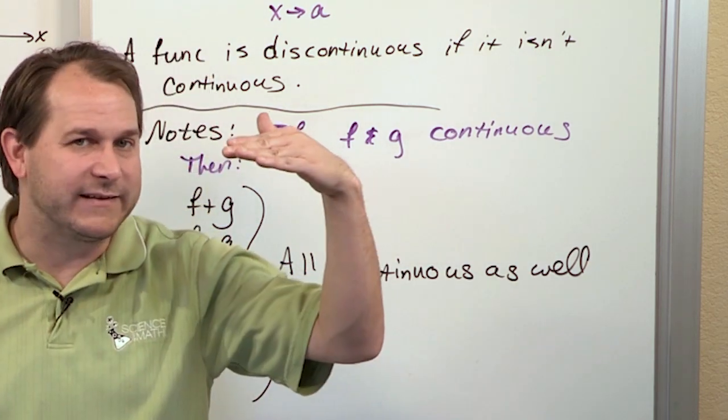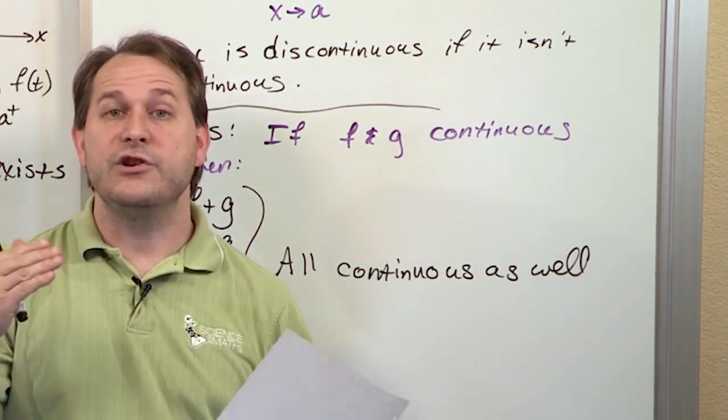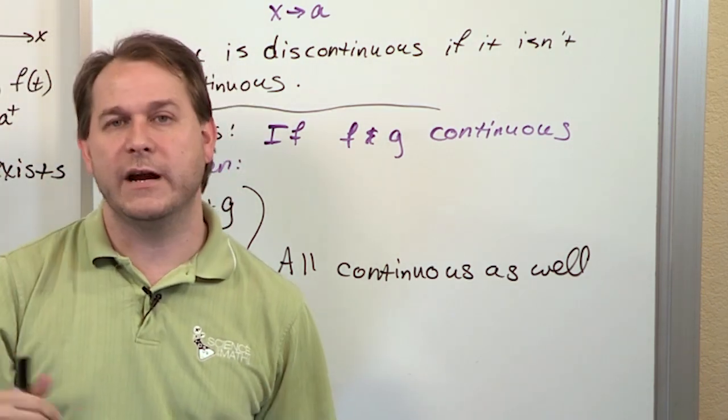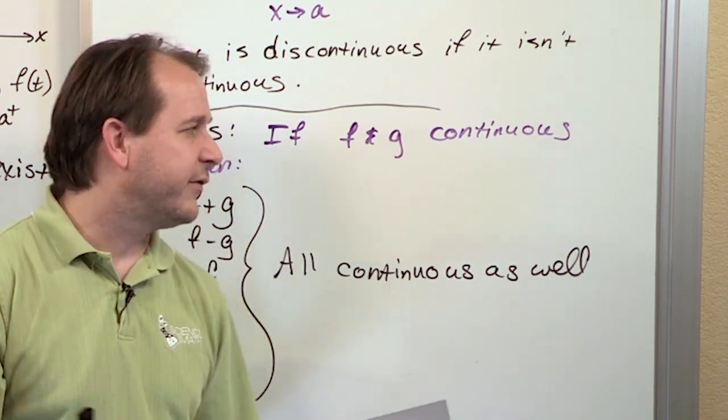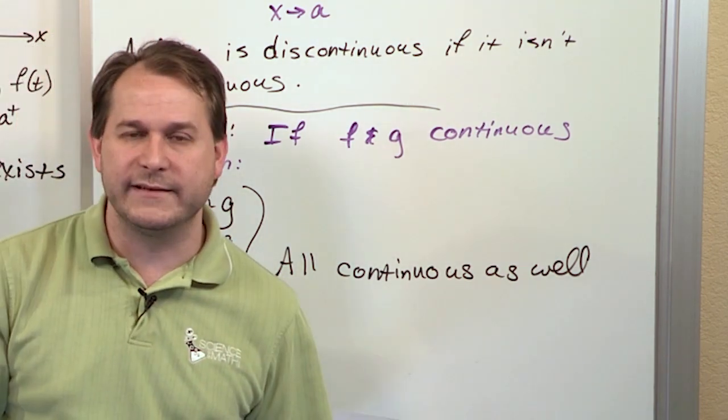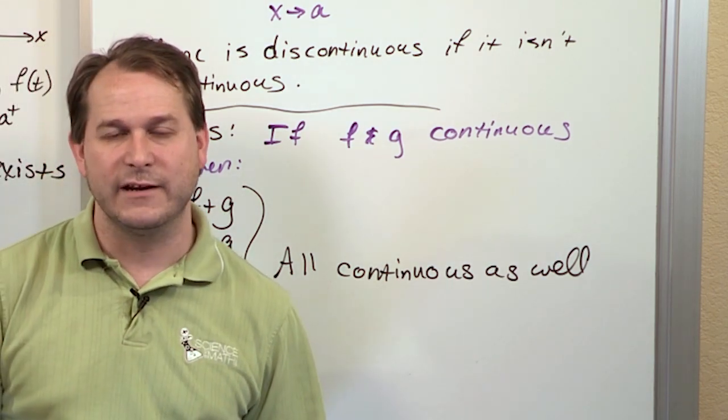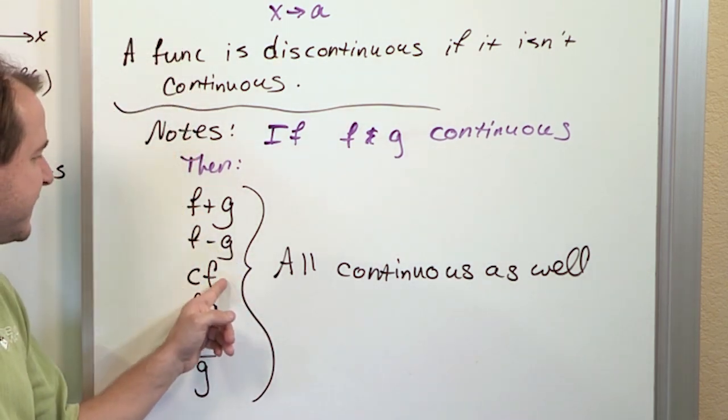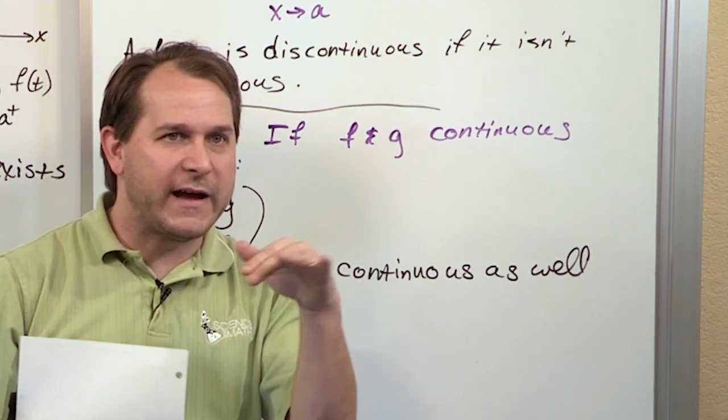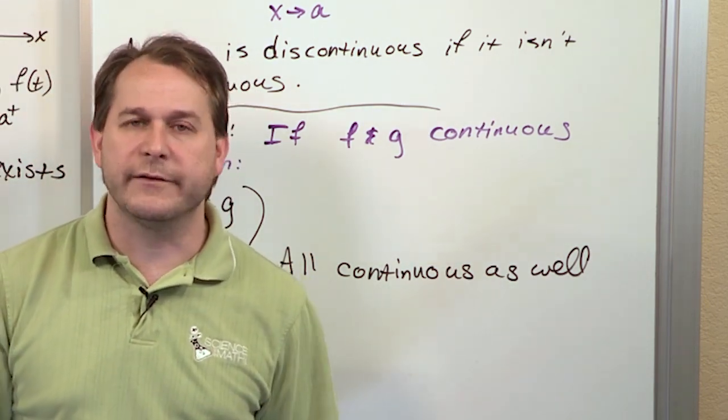So if you know, for instance, that sine is continuous, and you know that cosine is continuous, then you also know that sine divided by cosine is also continuous. You also know that sine plus cosine is continuous. You also know that five times the sine is continuous. You know that five times the sine plus cosine is continuous.